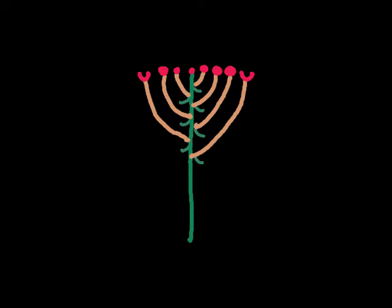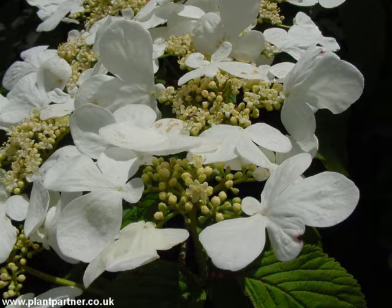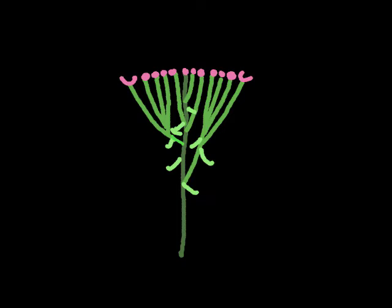The next one is the corymb. This is where it's got quite a flattened structure — the flower looks quite flattened — and generally speaking the outer pedicels with the flowers on open before the inner ones. There are some lovely examples: Achillea, which you can see has quite a flattened structure. We've also got a lovely Viburnum plicatum here — possibly Mariesii or Lanarth — where the outer flowers open before the inner ones. You can also get compound corymbs where they split again.